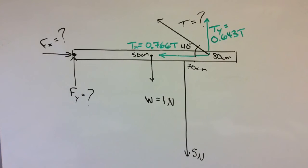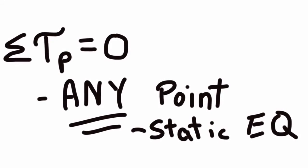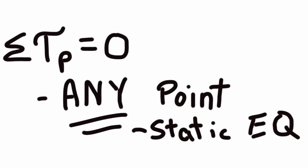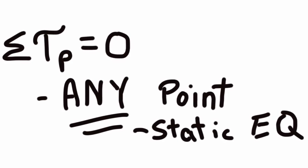You know you can't solve anything with the first condition for equilibrium, so you move on to the second condition for equilibrium, which says that the net torque about any point in the universe for this system is equal to zero.